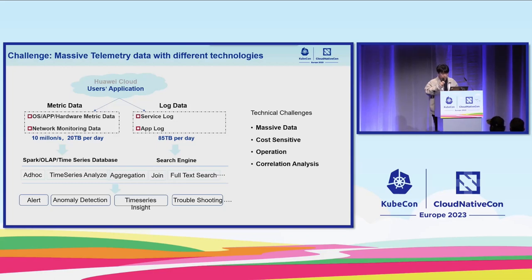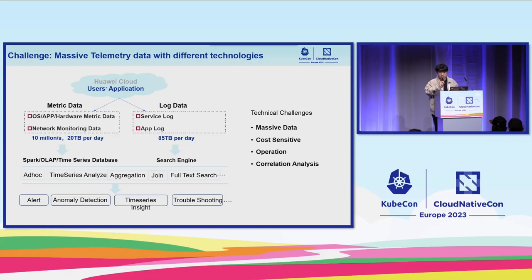For this goal, we introduced many data engines into our system, such as Spark for stream processing, and time series databases to store metric data. For log data, we introduced search engines for full-text searching and log storage. This seems to solve some problems, but the disadvantages are also apparent. First, massive data is redundantly stored in different storage engines, so storage cost is significant. Second, different data engines have different agents and collectors, so we have many clusters to update, scale out, or scale in — the operational cost is very expensive.